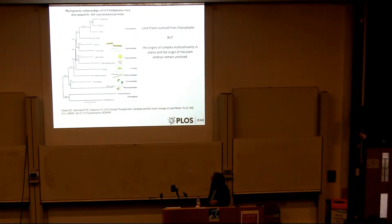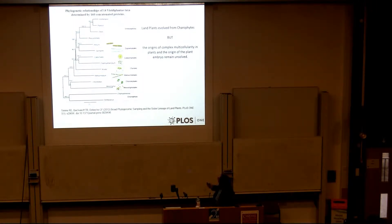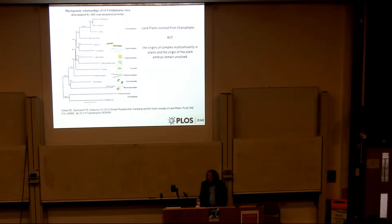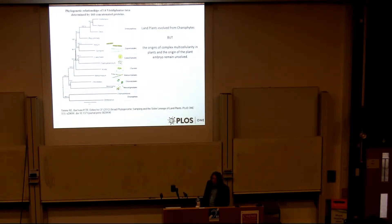We know a lot about the phylogeny of land plants — which algal groups they are derived from. Here's a 2012 phylogeny looking at the carophytes. This group of green algae, the carophyte algae, are the progenitors of the land plants. But there's a huge gap in morphology between the zygnematales, which are largely filamentous, and the complex multicellular morphology associated with land plants. So we're a long way from understanding the evolution of that complex multicellularity.